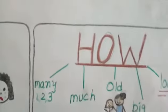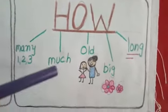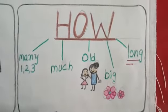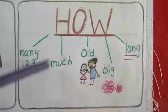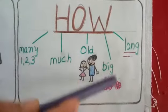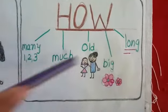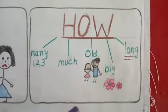Next question word is HOW. HOW always denote to a quantity. HOW MANY? HOW MUCH? HOW OLD? HOW BIG? HOW LONG? So this always denotes to a quantity.